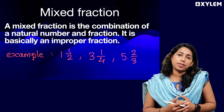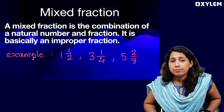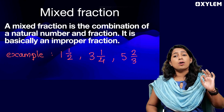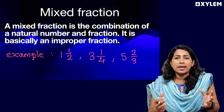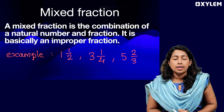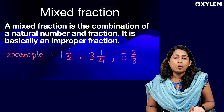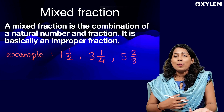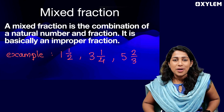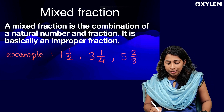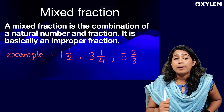If we convert a mixed fraction — what is the mixed fraction? A mixed fraction is a combination of a natural number and a fraction. It is basically an improper fraction written differently. Examples of mixed fractions are: 1 and 1 by 2, 3 and 1 by 4, 5 and 2 by 3.